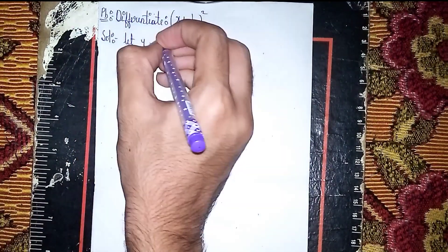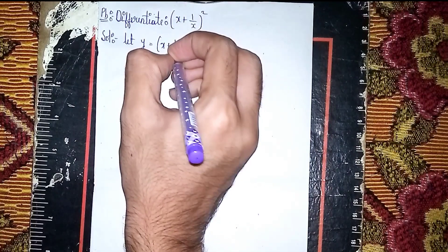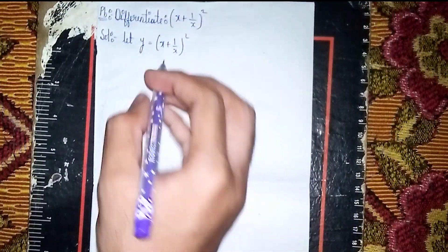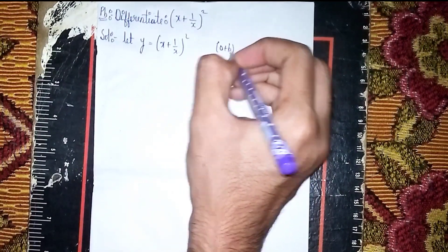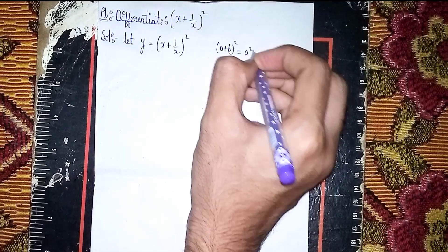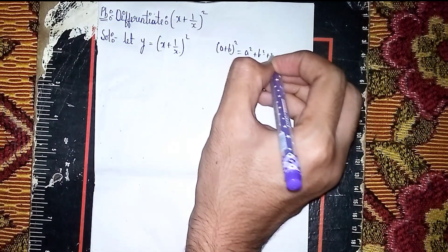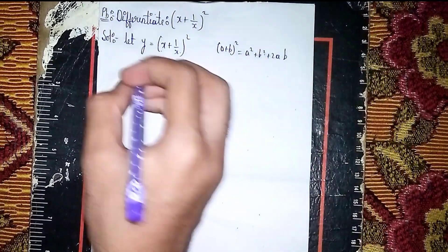Now here you can use (a+b) whole squared formula. The formula is: (a+b)² = a² + b² + 2ab.